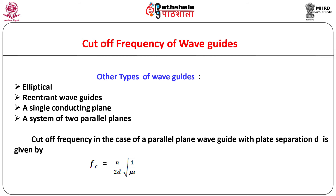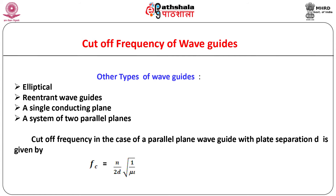Besides circular waveguides, we can have elliptical and reentrant waveguides which also allow propagation of electromagnetic waves. A single conducting plane or a system of two parallel planes can also serve as electromagnetic waveguides. Propagation for such waveguides can be discussed theoretically to obtain results similar to rectangular and circular waveguides. For example, the expression for cutoff frequency in the case of a parallel plane waveguide with plate separation D is given by a corresponding expression.